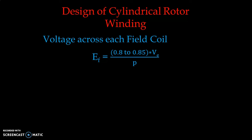The excitation voltage is normally known or fixed by the customer, typically around 125 volts but can vary based on requirements. 15 to 20 percent of the excitation voltage is consumed by the field rheostat or starters, and 80 to 85 percent reaches the field coil. Therefore, the voltage across each field coil is Ef = (0.8 to 0.85) × Ve / P, and this can be easily calculated.